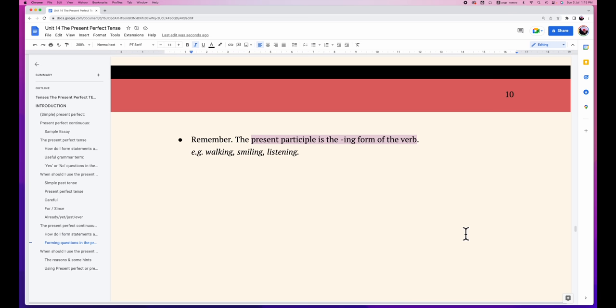Now one thing - remember, present participle is the -ing form of the verb. So the -ing form, the present participle - the -ing form of the word walk is walking, smile is smiling, listen is listening. So when we are talking about present participle we are talking about the -ing form.